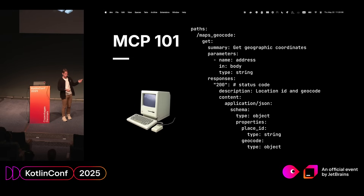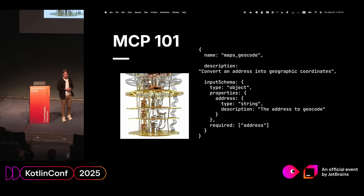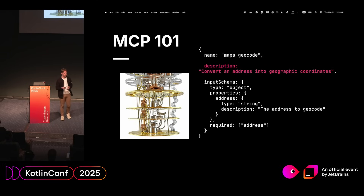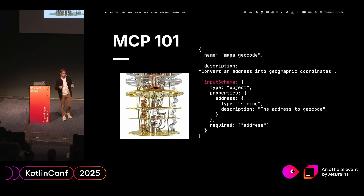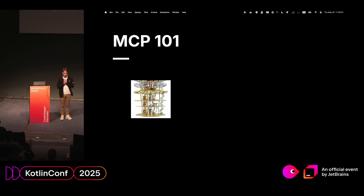If we want to do this for AI agents using MCP — making our services smarter — an MCP endpoint definition would look like this: we have a name 'maps_geocode,' a description which is very important for the agent to understand how to use this endpoint, and an input schema that tells the AI agent what to provide. In this case it's a JSON object with one property — 'address' of type string — and again a description, because LLMs need a lot of descriptions to work correctly.